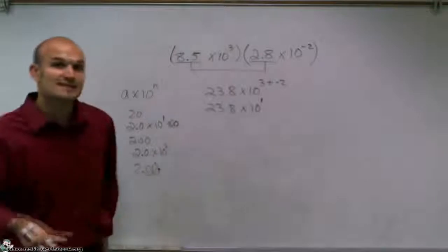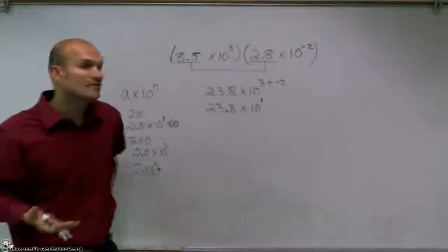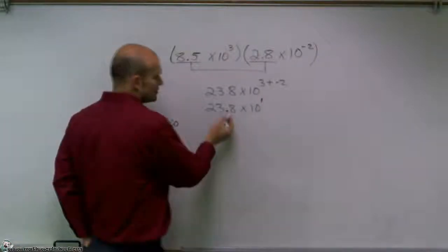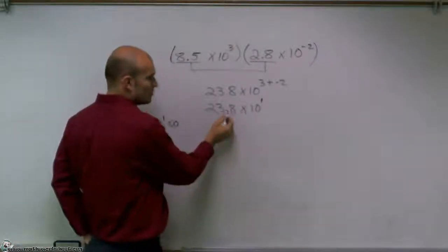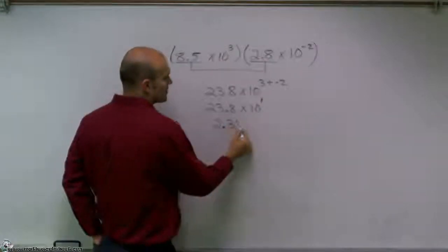However, this is non-scientific notation because this is 23, and 23 is greater than 10. So what I'm going to have to do is, I want my decimal point to be right here. I need to rewrite this as 2.38.